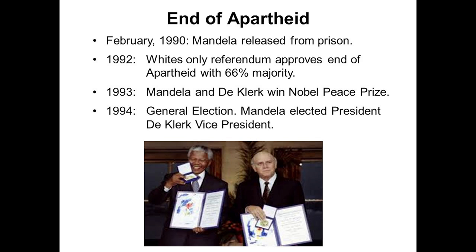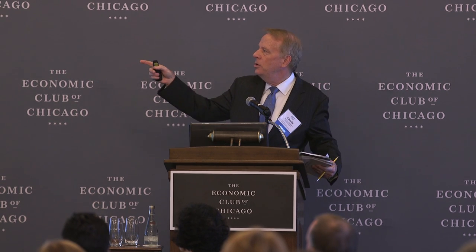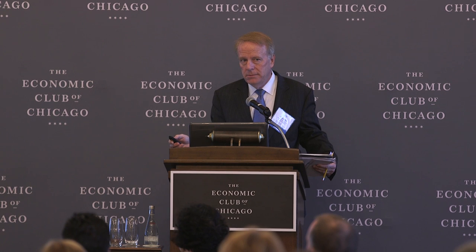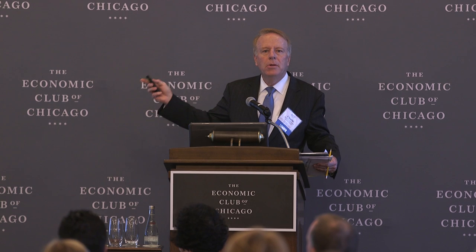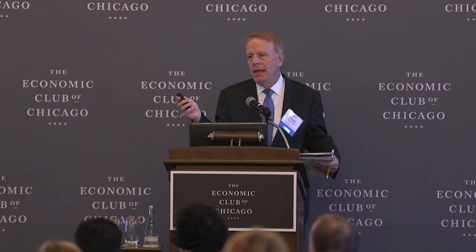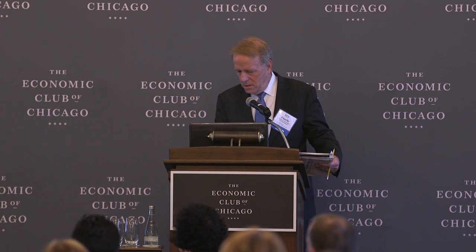There is what's called the tripartite alliance — the alliance between the ANC, which is Mandela; Joe Slovo, who was the head of the South African Communist Party; and the head of the South African Trade Union Association. The three of them formed an alliance and guaranteed seats in the cabinet for all three.